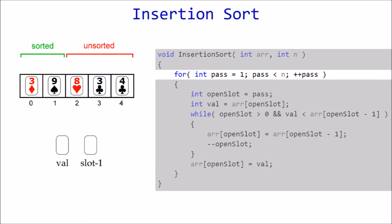Now we enter the second pass and 9 becomes part of the sorted section. Because this is pass number 2, open slot is set to index 2. And value is set to the element at that position. In this case, 8. 8 is less than 9, so we move 9 to the open slot and set the new open slot to index 1.